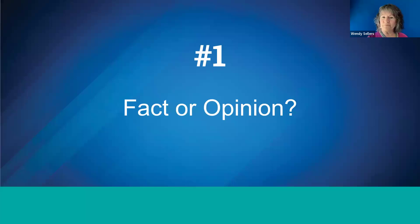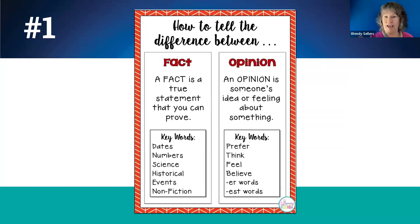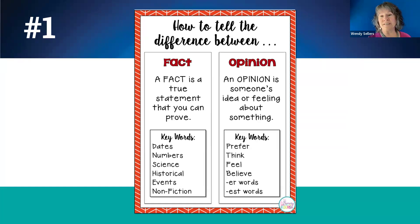So the first strategy: ask yourself, is this question about a fact or an opinion? Here's how to tell the difference. A fact is something that's provable — it has data, experts agree upon it, and you can prove it. Key words that tell you it's a fact question are if the question includes dates, numbers, science, historical events, current events, or nonfiction.